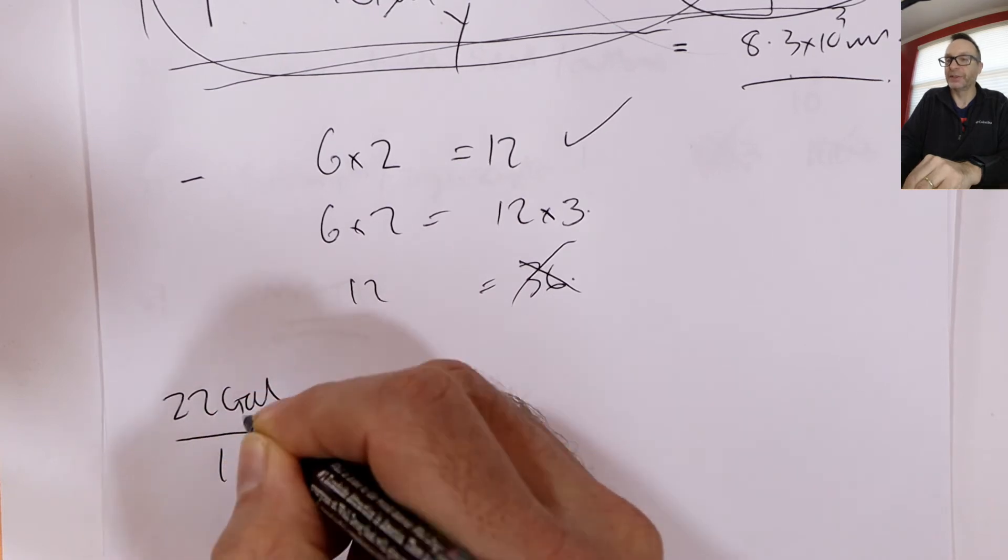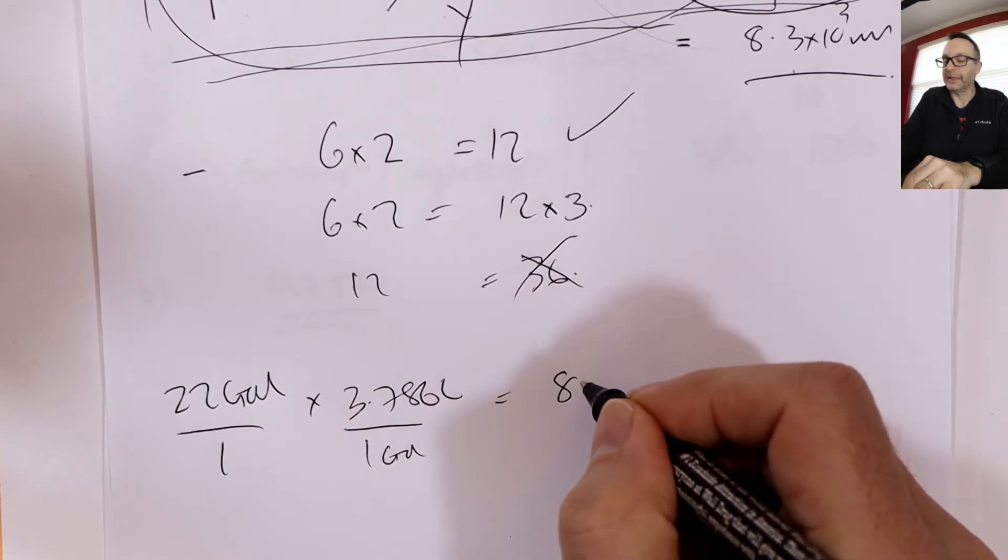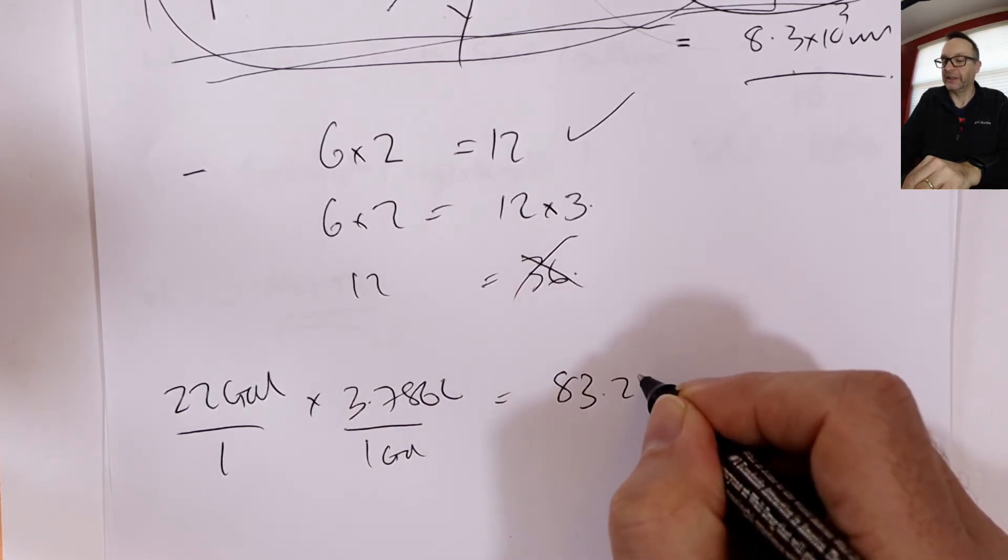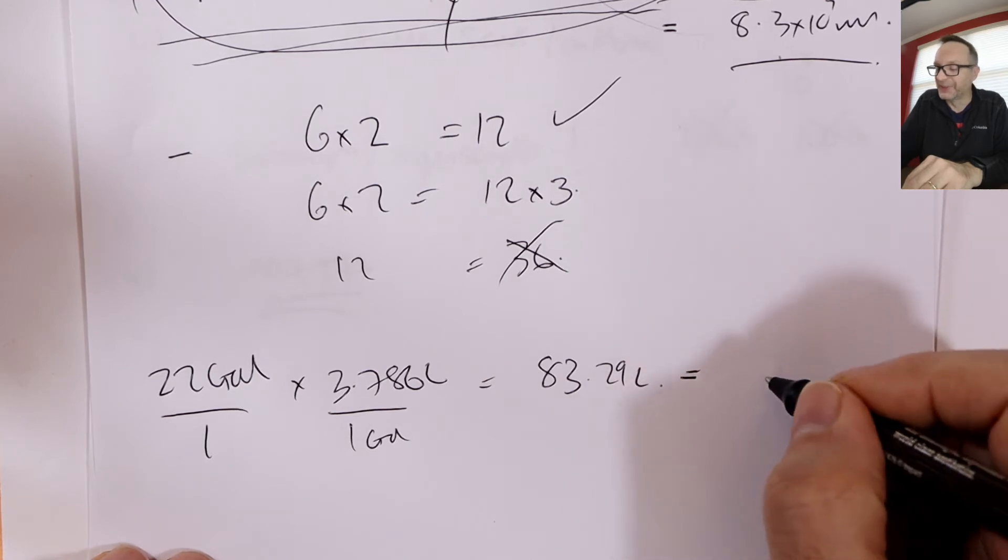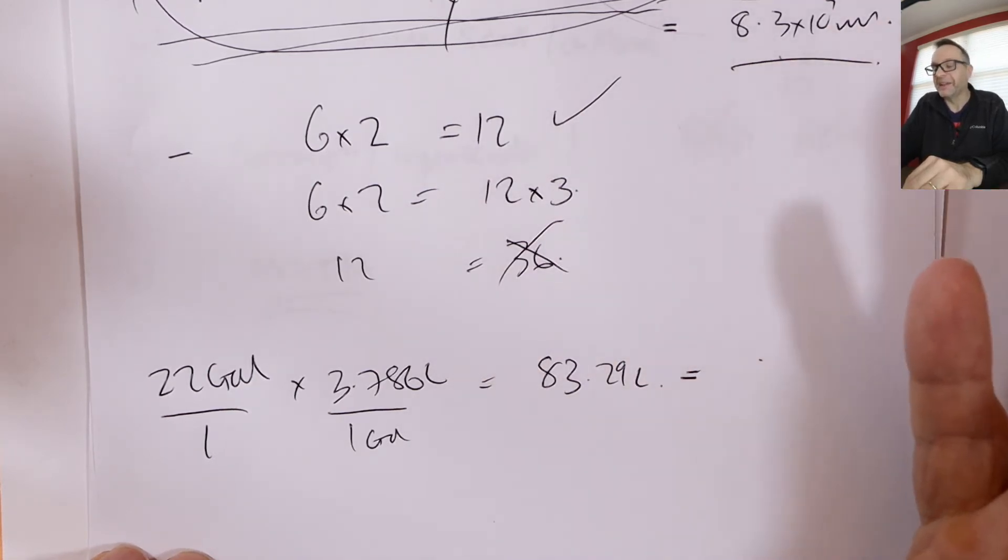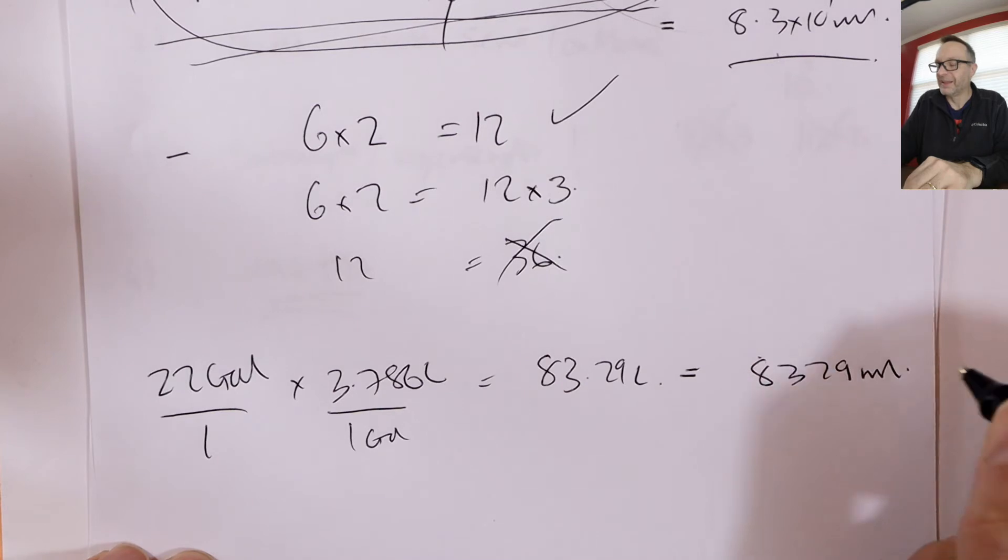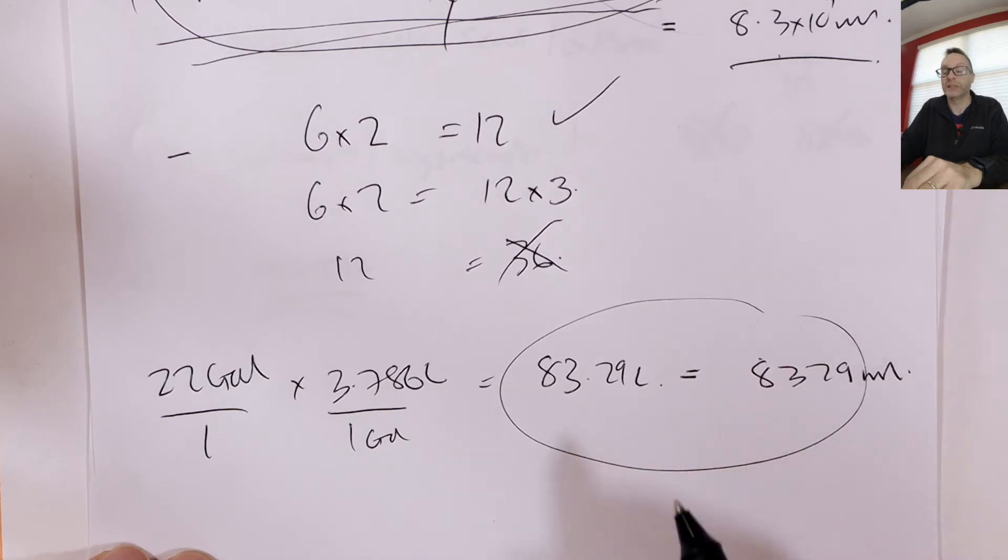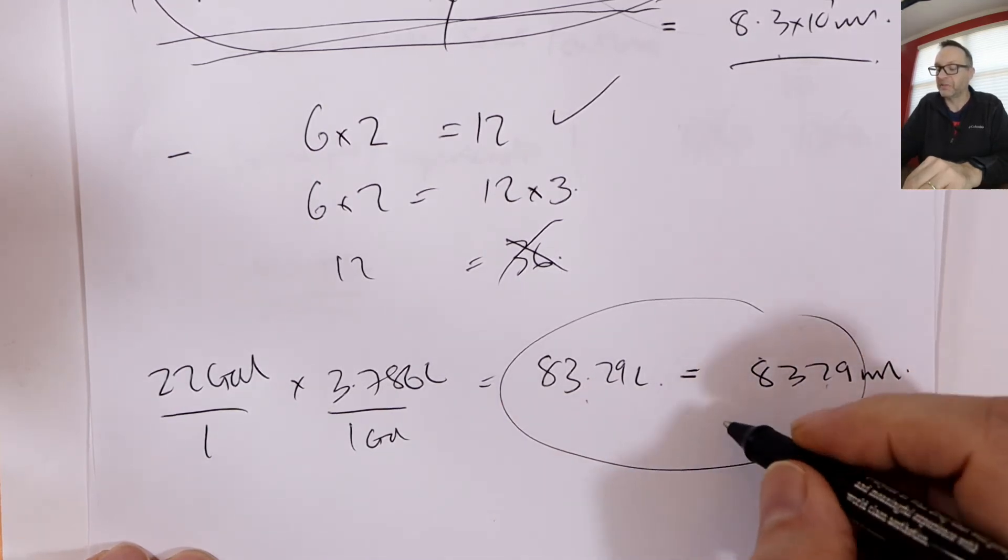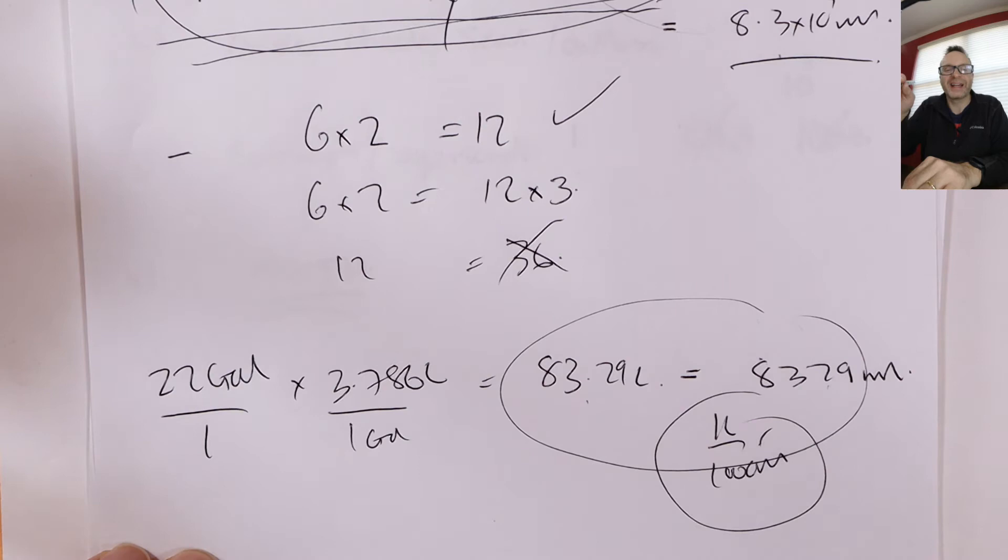So people did 22 gallons, say whatever it was, times 3.786 liters is one gallon. And they got 83,000, 83 gallons. Two, sorry, 83 liters. Fantastic. So far, so good. And then they just said equals multiplied by, oh, they say, oh, 83 liters, oh, that's just, move the decimal place three times. So they said, oh, that's 8329 milliliters. Huh? This is true, but you've got to show the conversion step. You've got to show how you get from liters to milliliters. You have to use the fraction one liter is 1,000 milliliters, which we'll show you in a second.